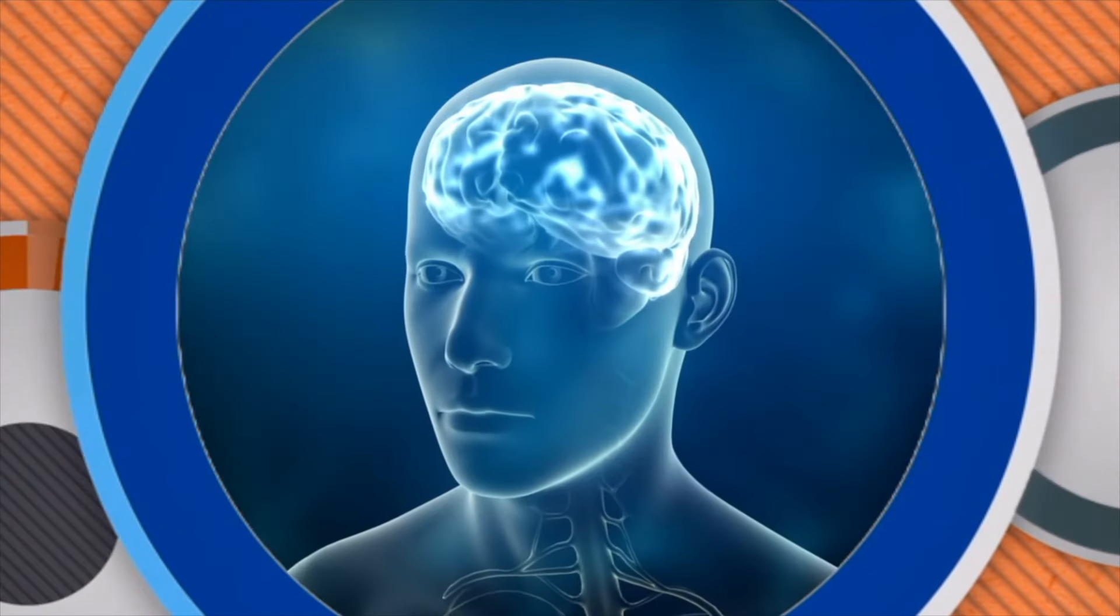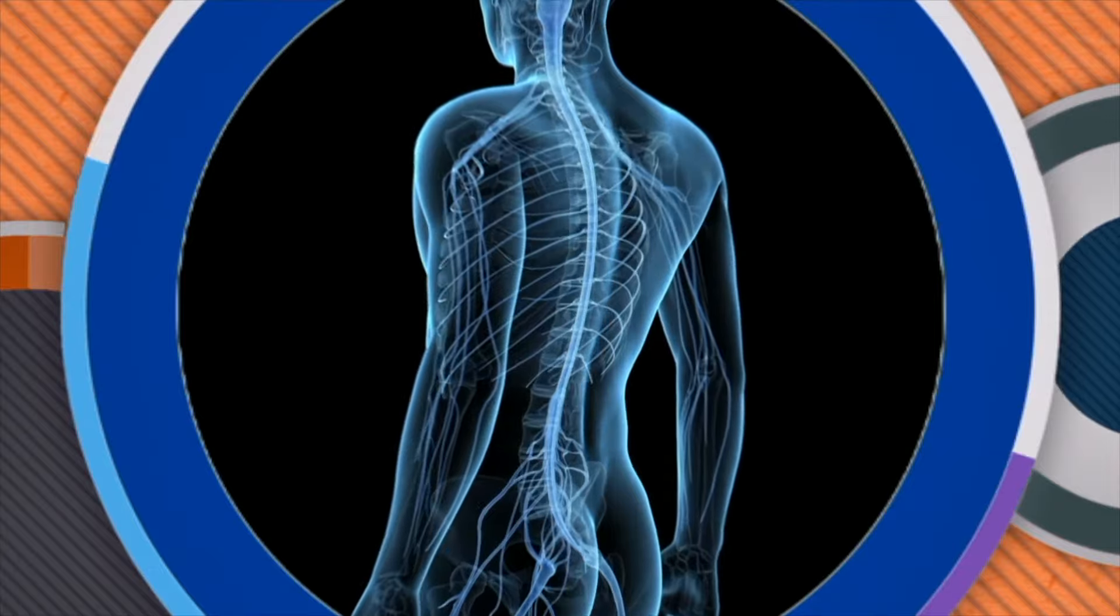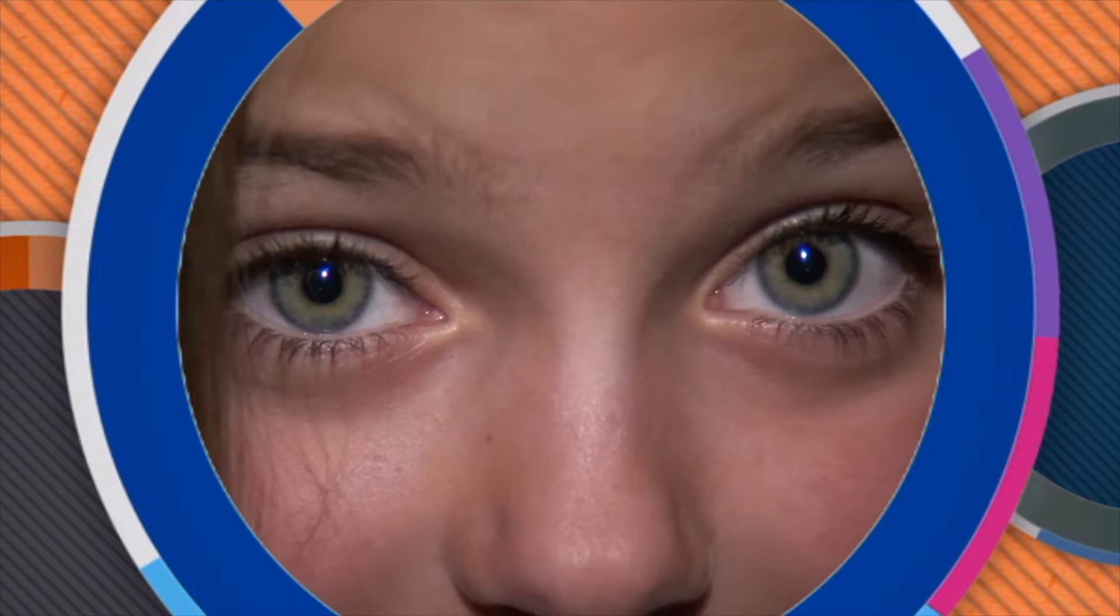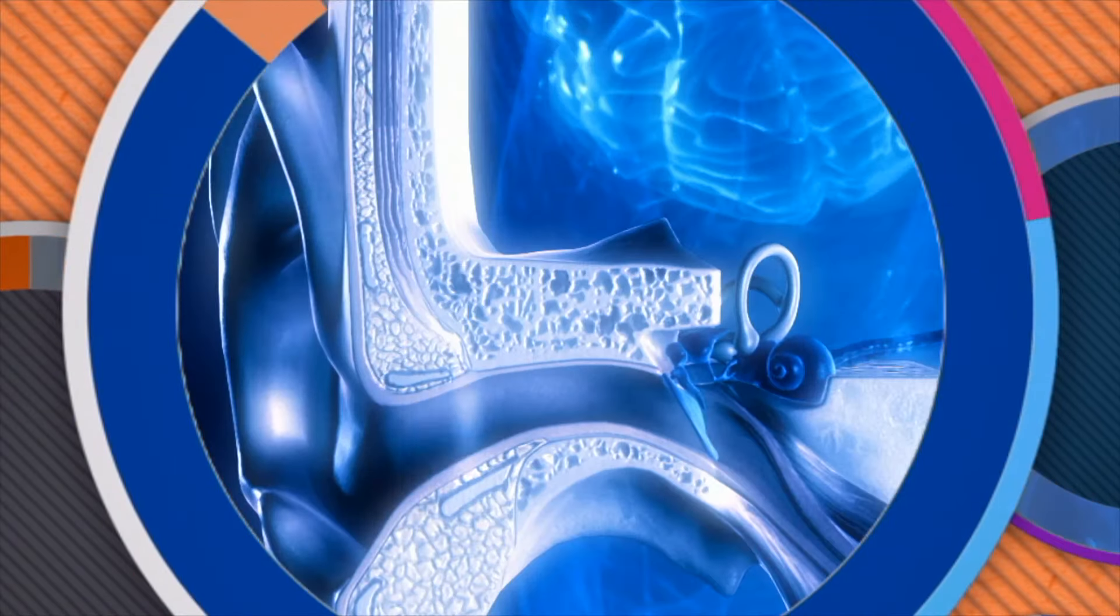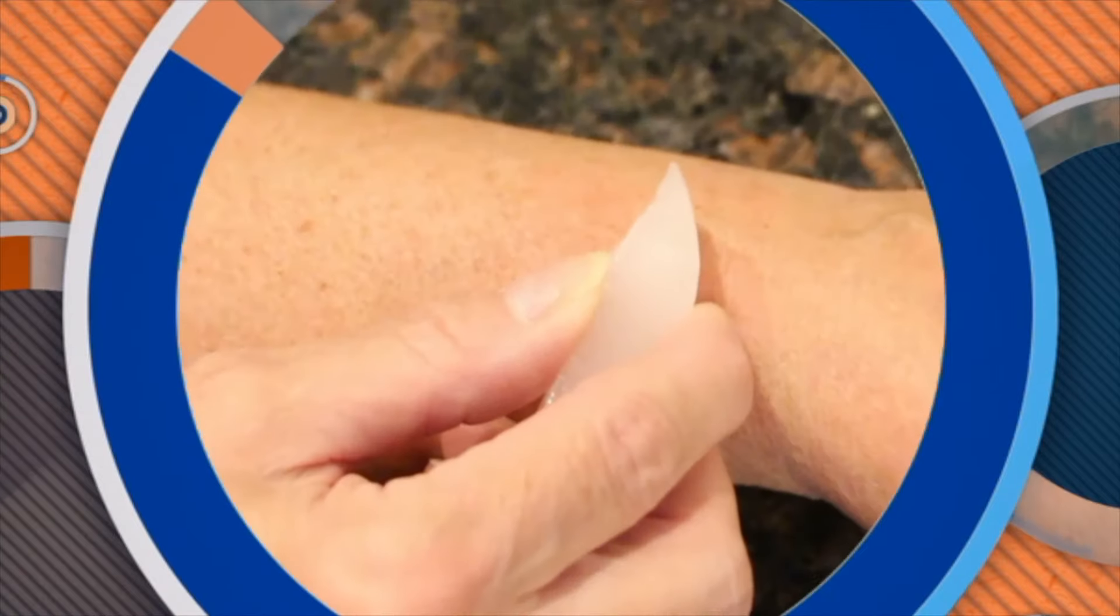Well, there you have it. Your body's communication system. Your brain, spinal cord, hundreds of millions of neurons, your eyes, ears, nose, tongue, and skin. All working together to keep you informed about what's happening inside your body and outside in the real world.